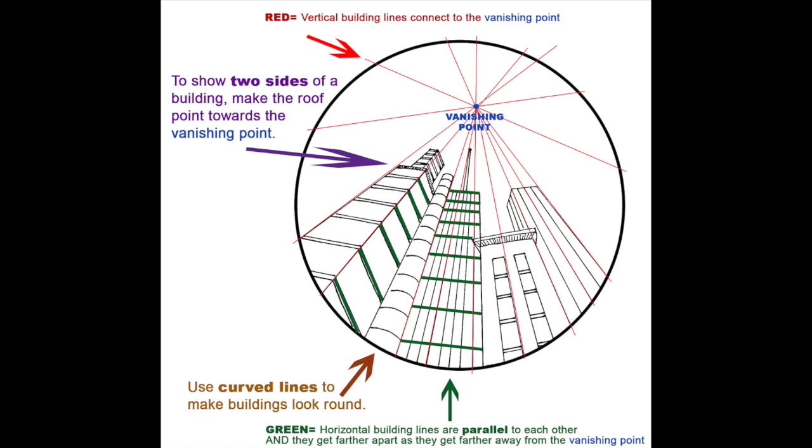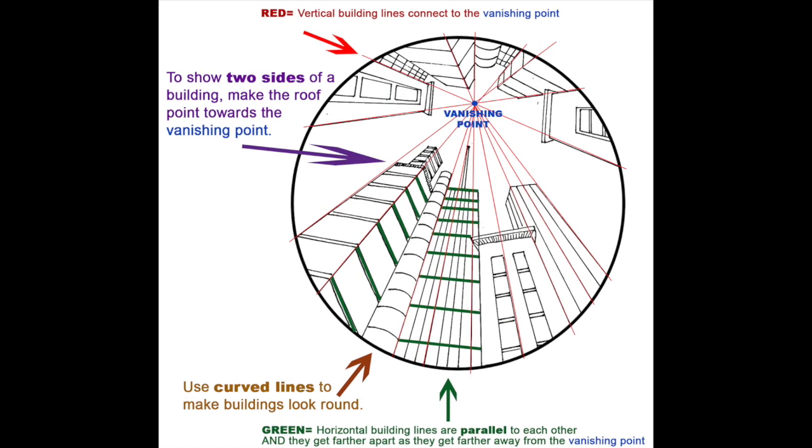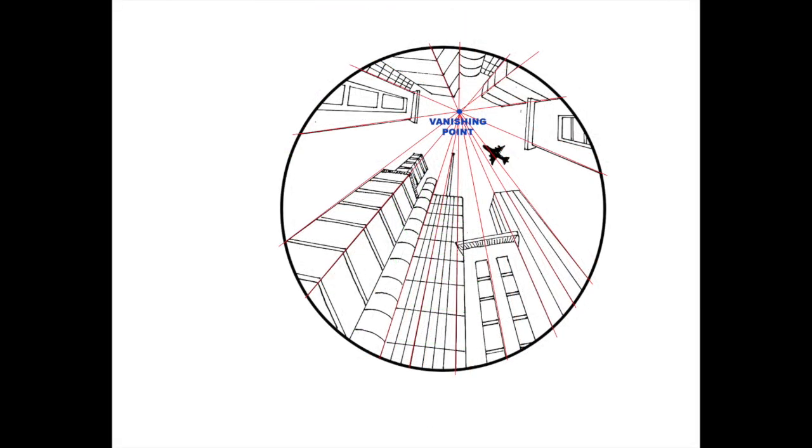So you just need to keep following those rules. If your building has vertical lines, they have to connect towards the vanishing point. If it has horizontal lines, you need to make them parallel to each other. If it's a round building, you're going to use curved lines and just keep going this way until you build the rest of your city.